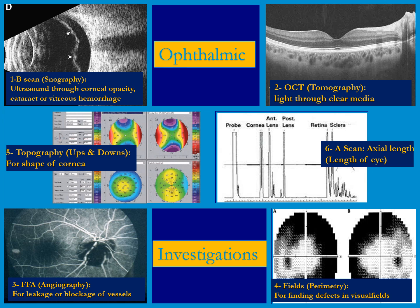The different investigations used in ophthalmology are: Number one, B-scan, which is ultrasound — we can see the back of the eye through an opaque cornea, a cataract, or a vitreous hemorrhage. Number two is OCT or optical coherence tomography, in which you can see the layers of the retina one by one. Number three is fundus fluorescein angiography, in which you can see the leakage and blockage of blood vessels. Number four is visual fields, where you can see the seen and unseen areas of the visual field. Number five is corneal topography, which is for the shape of the cornea. And number six is the A-scan, which is to find out the length of the eye.